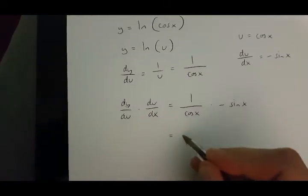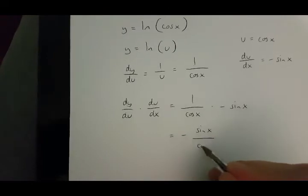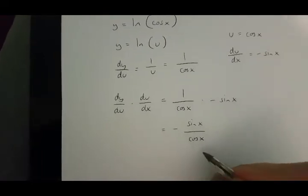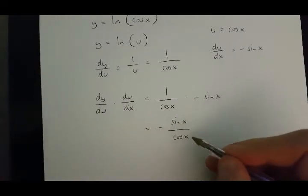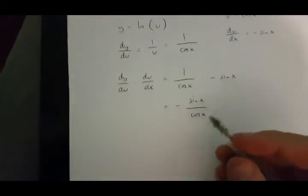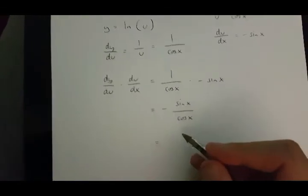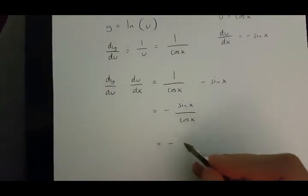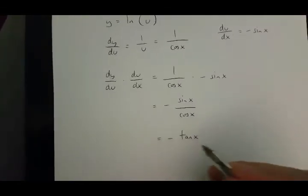And this is the same as minus sin x over cos x. Now, sin x over cos x is equal to tan x. So, what we have is dy over dx is minus tan x.